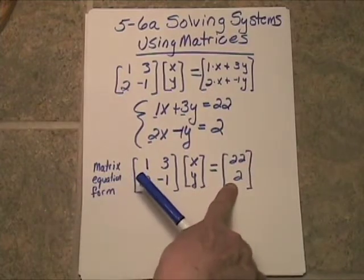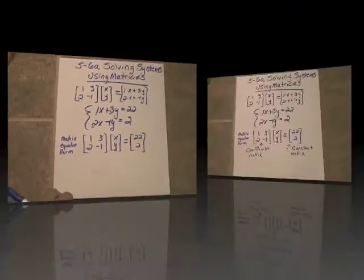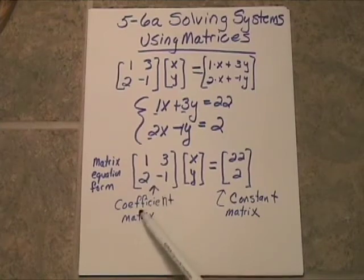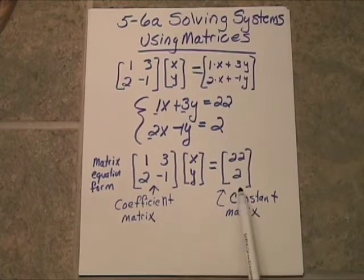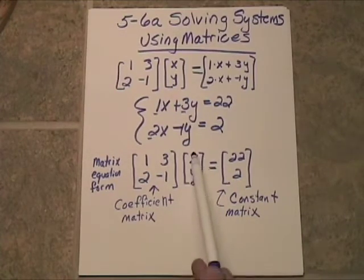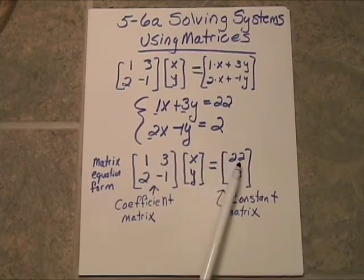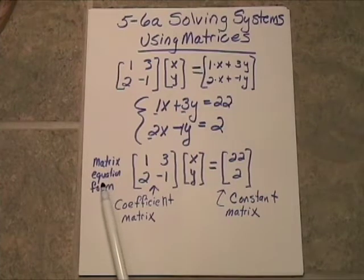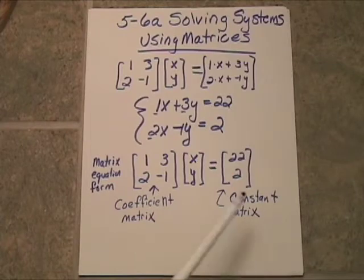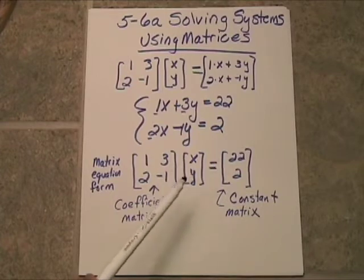So this is another way of writing this. And in the matrix equation form, this first matrix on the left is called the coefficient matrix. And over here the constant matrix. Now, to solve for the x and the y here in the point matrix, all we have to do is multiply both sides of this matrix equation by the inverse of the coefficient matrix. So you just go ahead and take a few moments and you figure out, first of all, if the inverse exists.